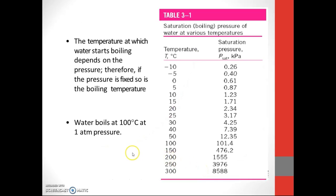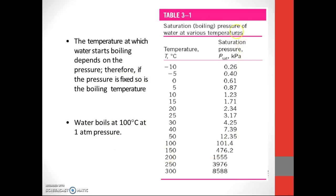From the diagram, it can also be represented by a table. The temperature at which water starts boiling depends on the pressure. Therefore, if the pressure is fixed, so is the boiling temperature. Water boils at 100 degrees Celsius at one atmospheric pressure. This is an example from Table 3.1 — saturation or boiling pressure of water at various temperatures.